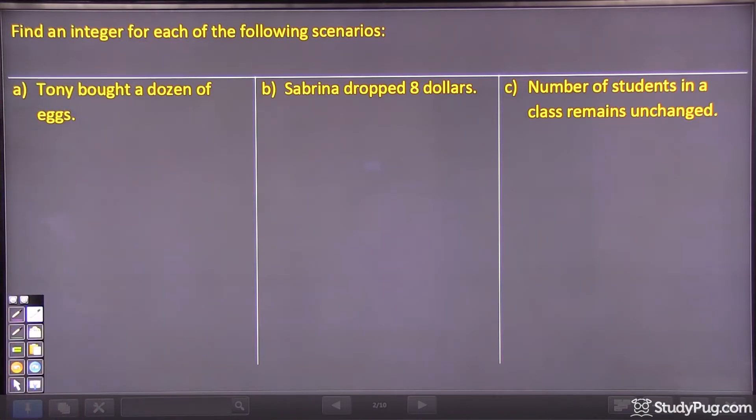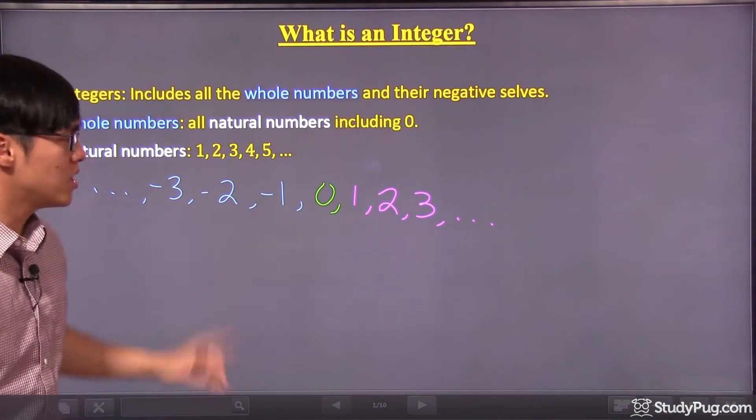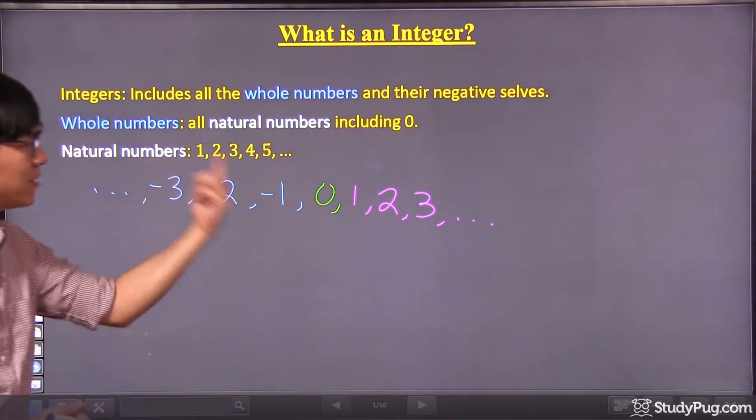Let's take a look. For part A, Tony bought a dozen of eggs. So as we know, integers are any of the numbers over here. We can have the positives, we can have the zero, or we can have the negatives.